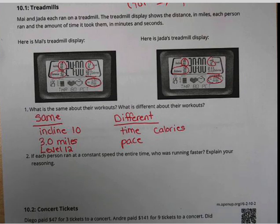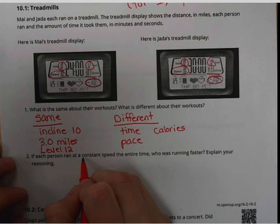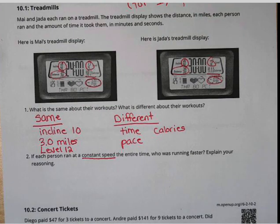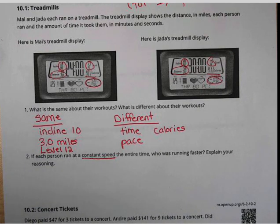Question two says: if each person ran at a constant speed the entire time, who is running faster? So constant speed means the same speed the entire time—they weren't going fast and slow, they didn't sprint some, walk some, jog some. They just went at the same pace. It's kind of like when you set the cruise control on your car.